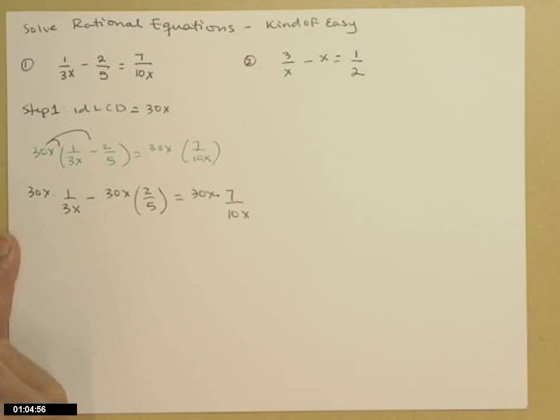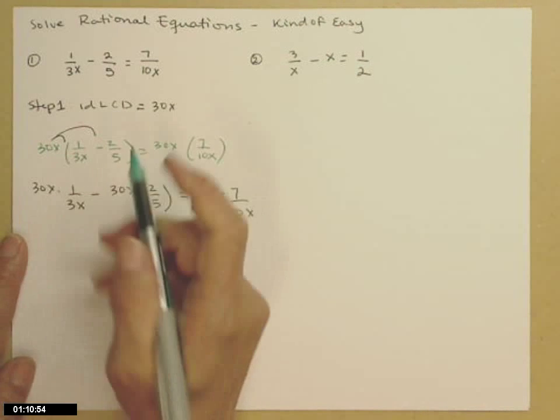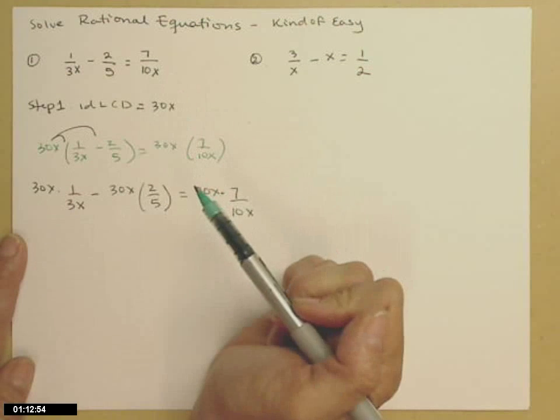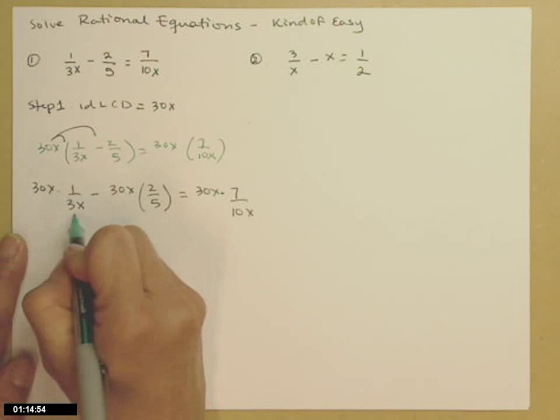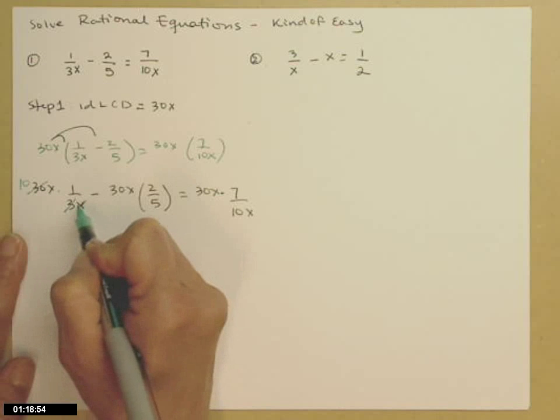So again, what we're going to do now is go through and cancel all of those common factors. That's why we decided to multiply by the LCD because it takes this equation that has fractions in it. So look here, the 30 and the 3 cancel, leaves behind 10. The x's just cancel.